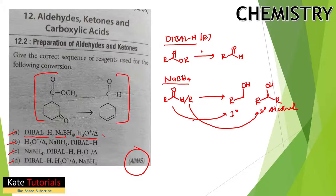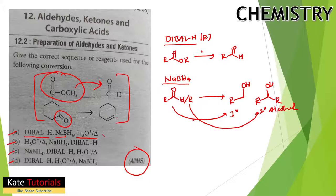So here we want to convert the ester to an aldehyde. The ketone, when treated with NaBH4, will be converted to an alcohol, and further elimination will give us a double bond.